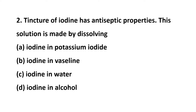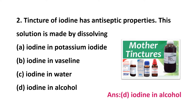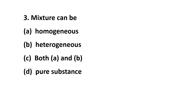Second question: tincture of iodine has antiseptic properties. This solution is made by dissolving — option A: iodine in potassium iodide, option B: iodine in vaseline, option C: iodine in water, option D: iodine in alcohol. We might have used tincture when we get a wound. The tincture is a combination of iodine with alcohol. The answer is option D: iodine in alcohol.